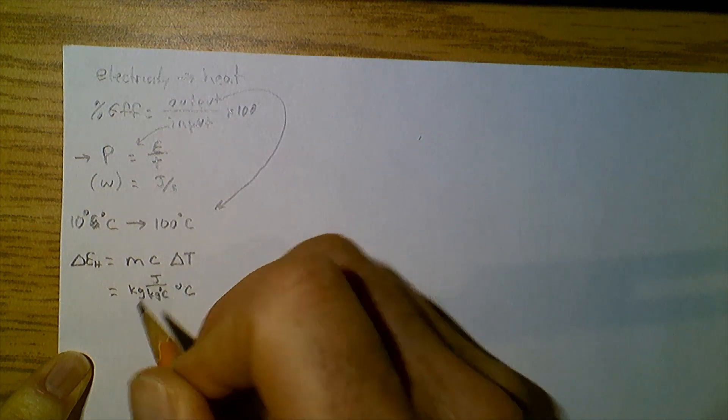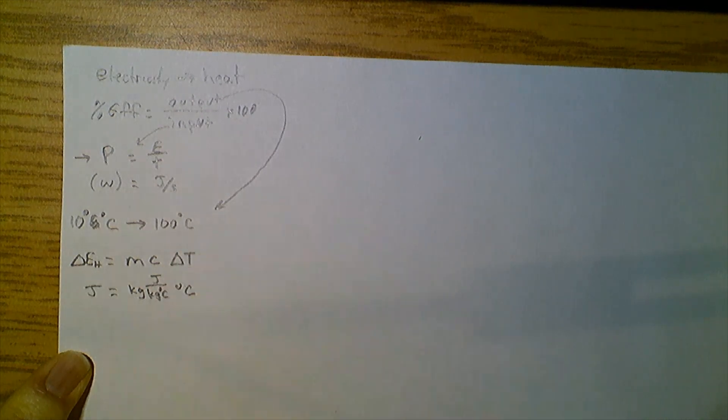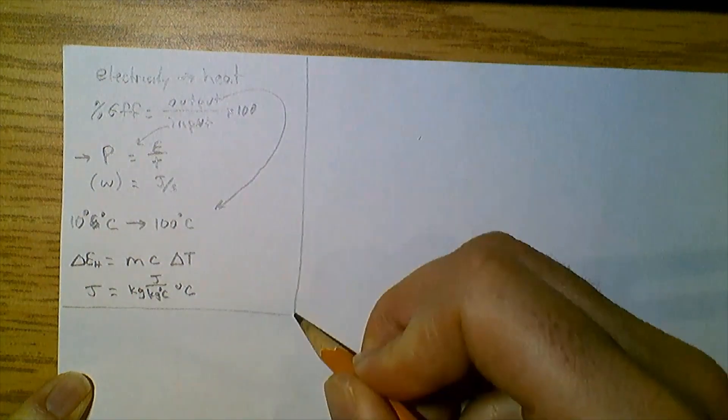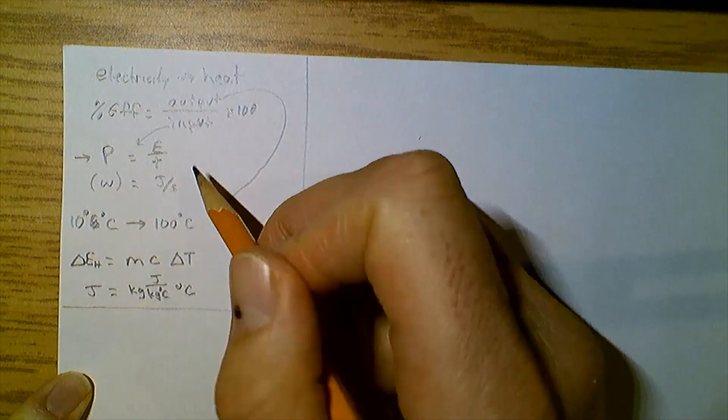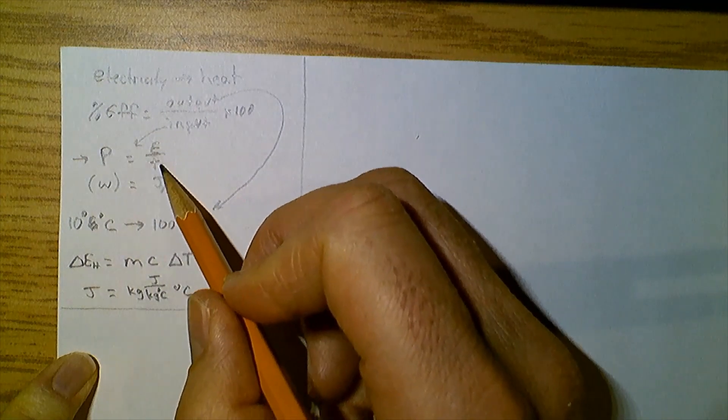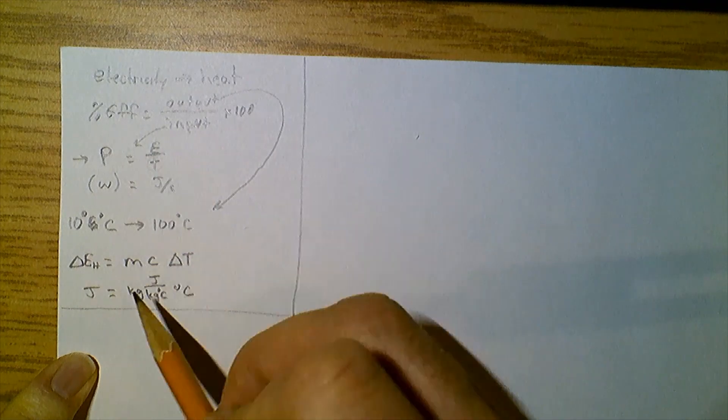Okay, so this is where we're starting. I'm going to get the input energy from the kettle, figure out the time it takes to give it the energy that it needs, and we'll do the calculations from there. So let's go have a look.